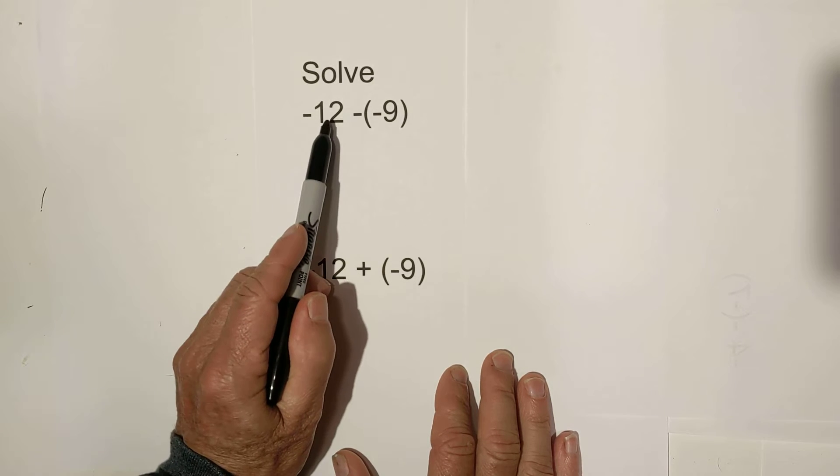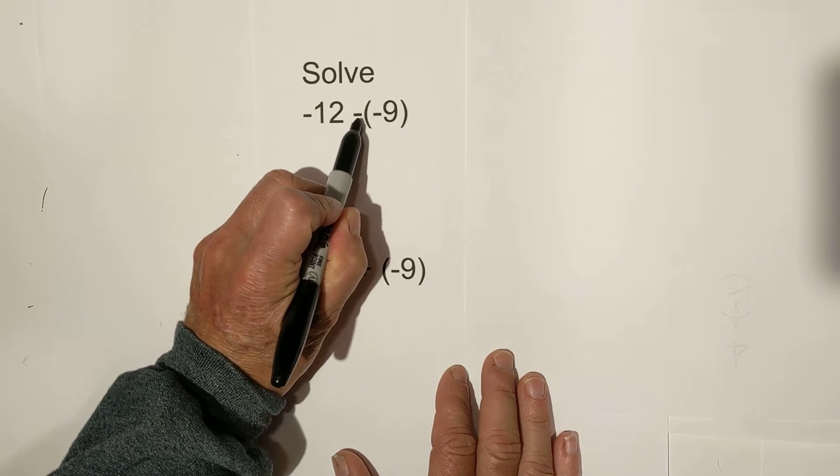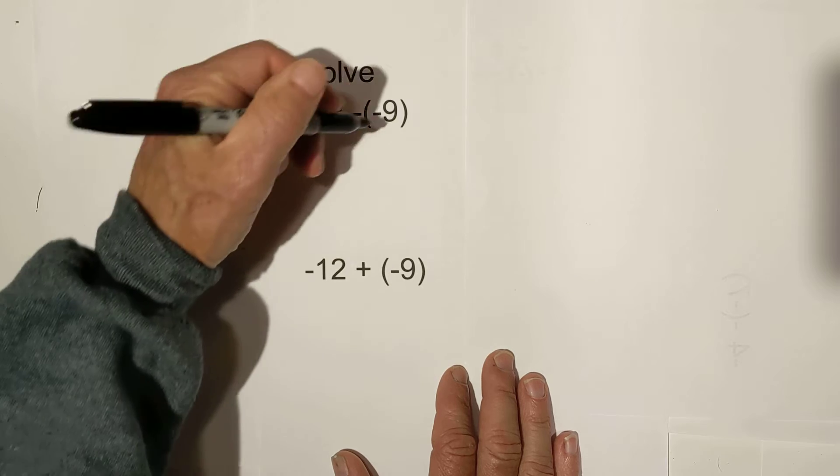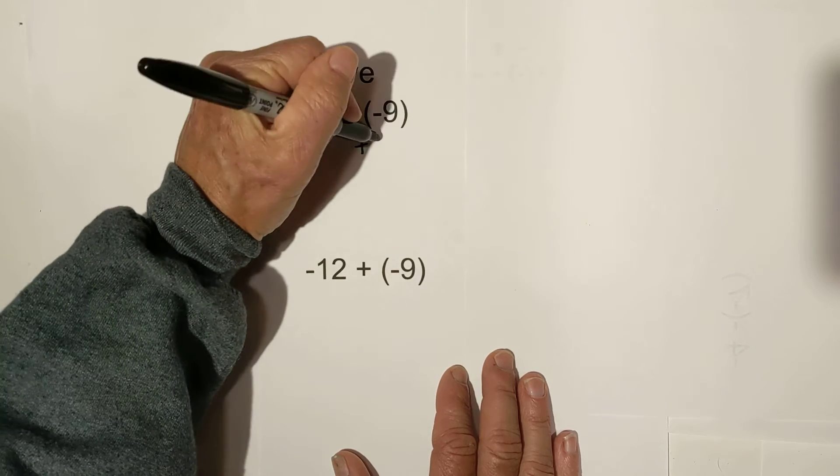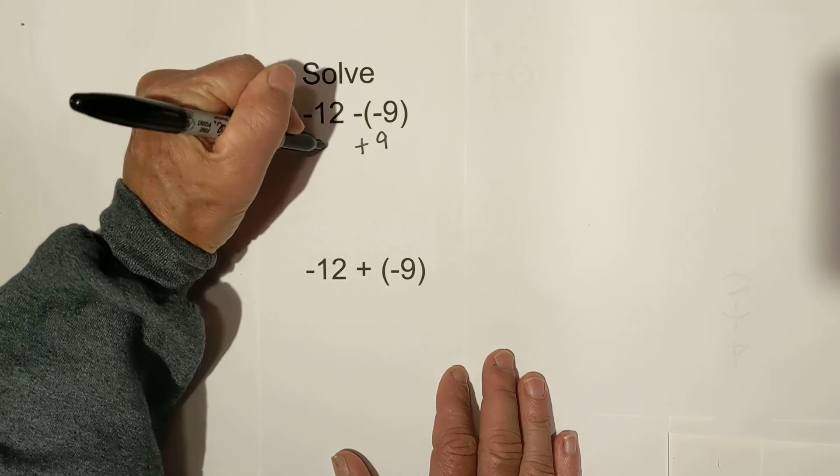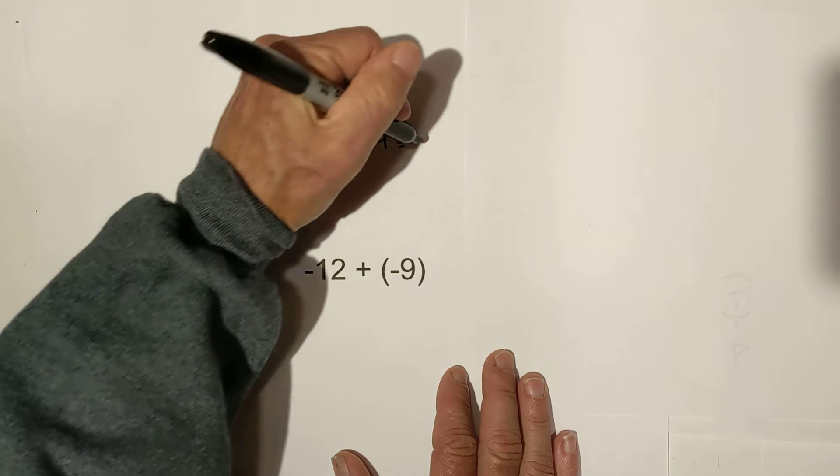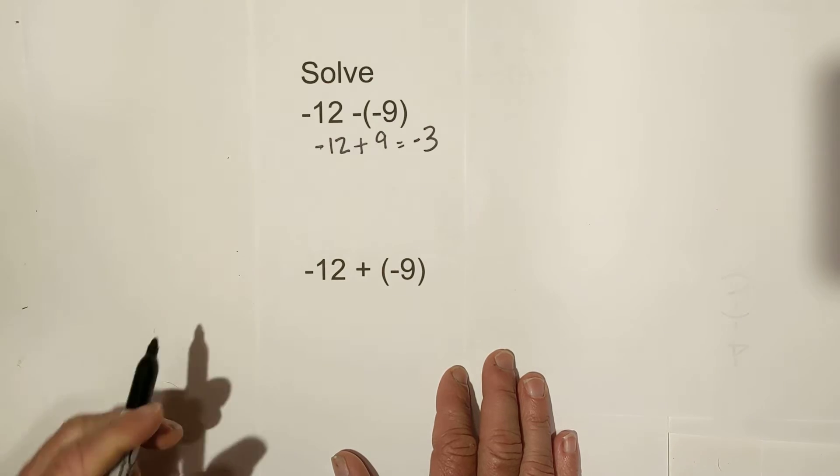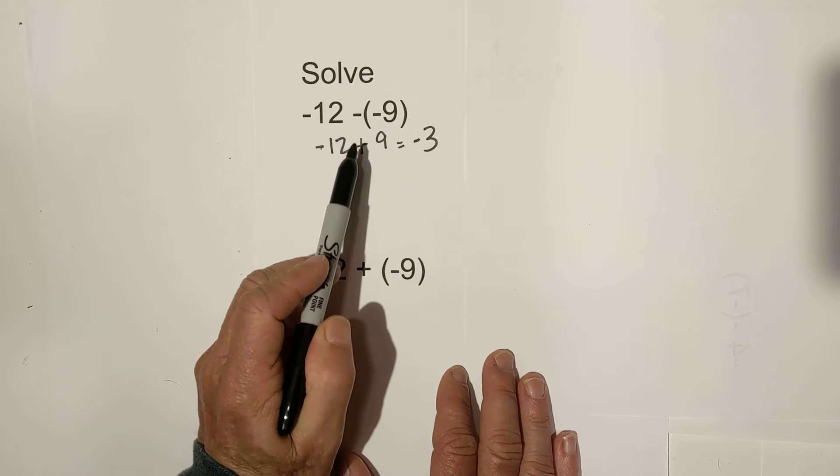We have negative 12 minus a negative 9. The first thing, this is a negative of a negative, which is a positive. So whenever you are subtracting a negative number, that becomes a positive. And then we have negative 12, and negative 12 plus 9 equals negative 3. The key is the negative of a negative is a positive.